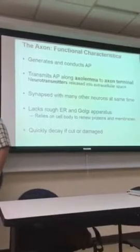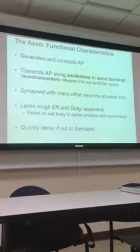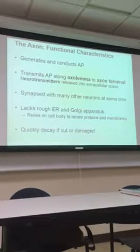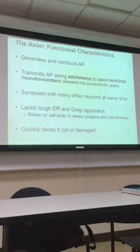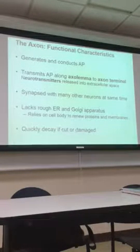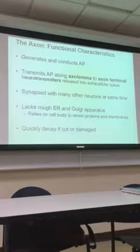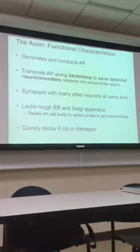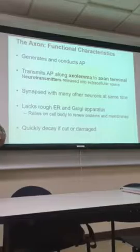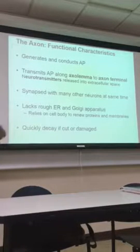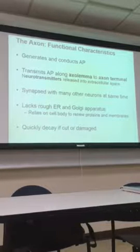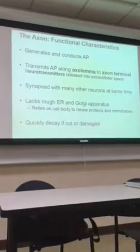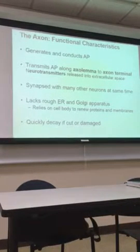While dendrites can generate graded potentials, somas can generate graded potentials, axons only propagate action potentials. If there is not enough of a potential difference across the membrane of a neuron to reach AP, the axon doesn't do anything. But if there is graded potential to threshold, the axon enters AP.